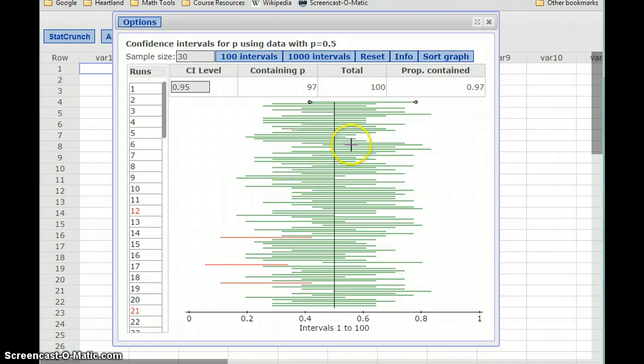So these green bars represent that stretched value, that range of values. Every time that bar occurs in green, that means our confidence interval successfully captured this true population proportion of 50%. And everywhere we get a red bar, we have a confidence interval that failed to capture that.